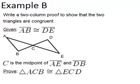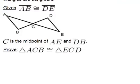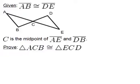In example B, it says, write a two-column proof to show that the two triangles are congruent. Given, AB is congruent to DE, so let's mark that, and C is the midpoint of AE and DB.